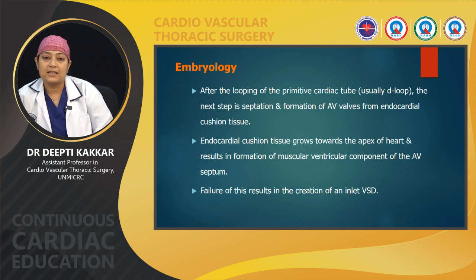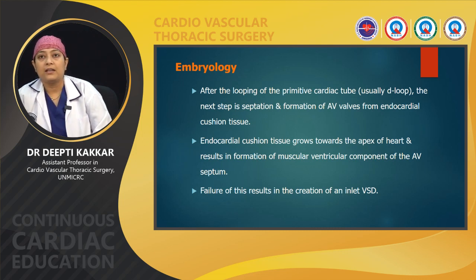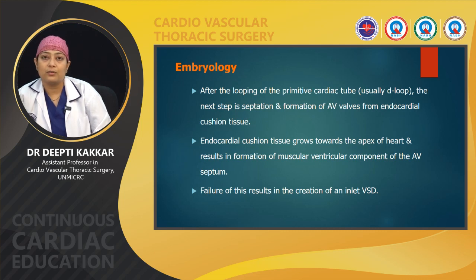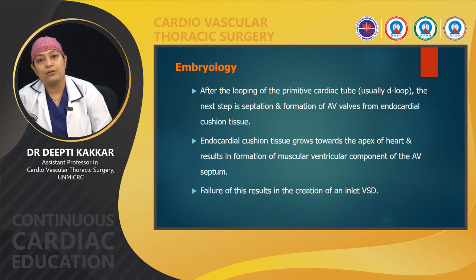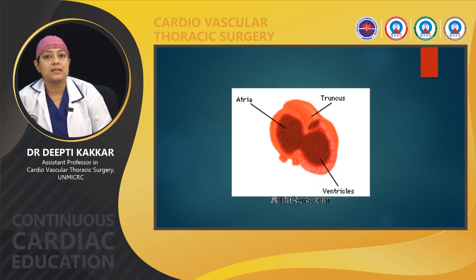Embryologically, after the looping of the primitive cardiac tube, the next step is the formation of the AV septa and the formation of the AV valves from the endocardial cushion tissue. The endocardial cushion tissue grows towards the apex of the heart, resulting in the formation of a muscular ventricular component of the AV septum. Failure of this results in the creation of an inlet VSD. This is an animation showing the same.